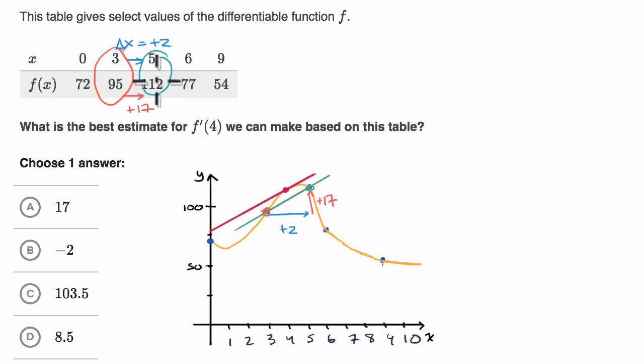And so my change in y over change in x, change in y over my change in x for this secant line between when x is equaling three and x is equaling five is going to be equal to 17 over two. 17 over two, which is equal to 8.5.